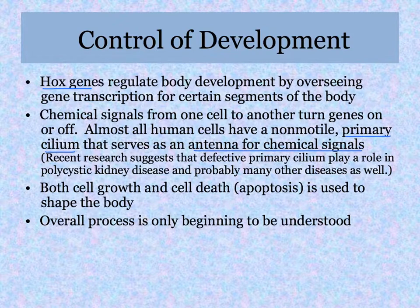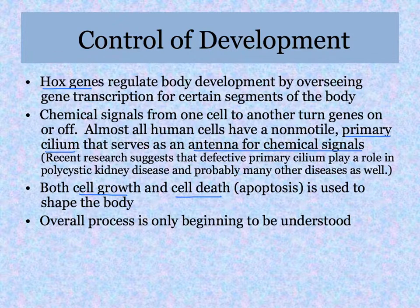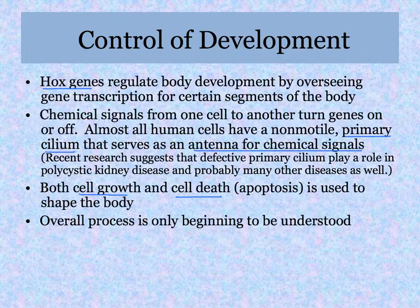As the body is shaped during the embryonic period, both cell growth — increasing cells in number and size — and cell death, or apoptosis, are used to shape the body. For example, hands start off in a very webbed form, and the cells between the fingers die, allowing those fingers to be free. We are really only beginning to understand this very complicated process of development — it's a whole course of its own.